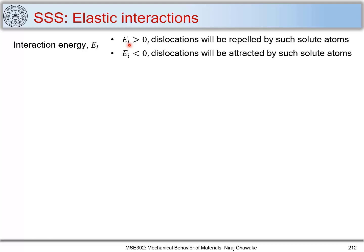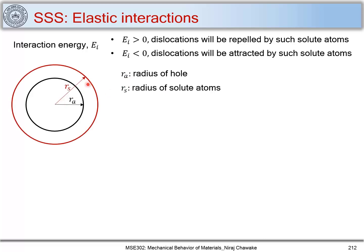Now let's consider a general case where we consider a hole — that is the position available for solute atoms to occupy in the solvent — and let's consider its radius to be rA, and the radius of solute atoms to be rS. We can write rS in terms of rA as rS = rA(1 + δ). When δ is greater than zero, the solute atom is oversized.